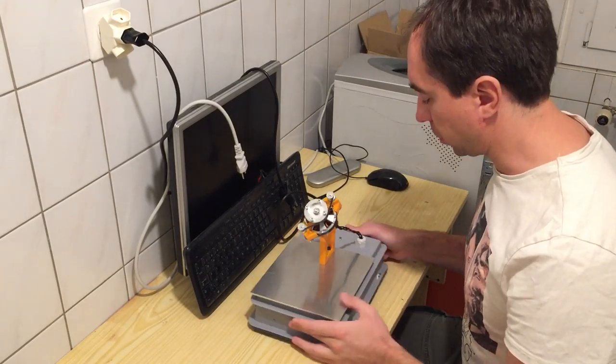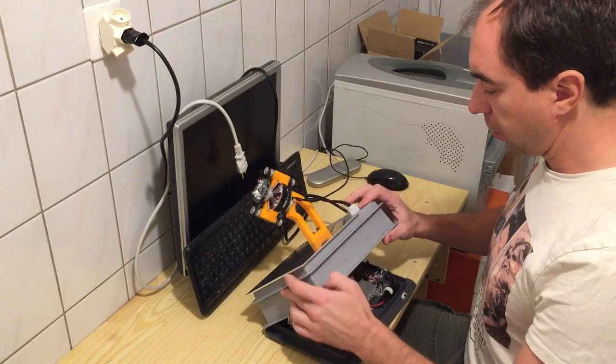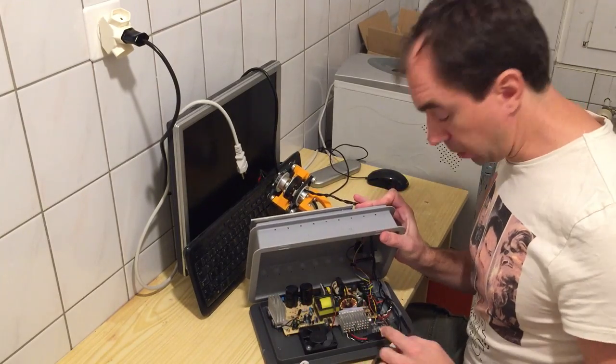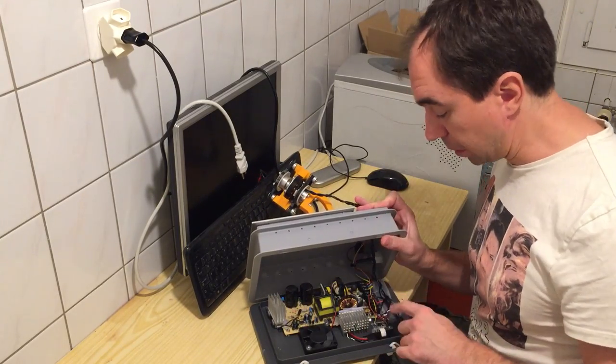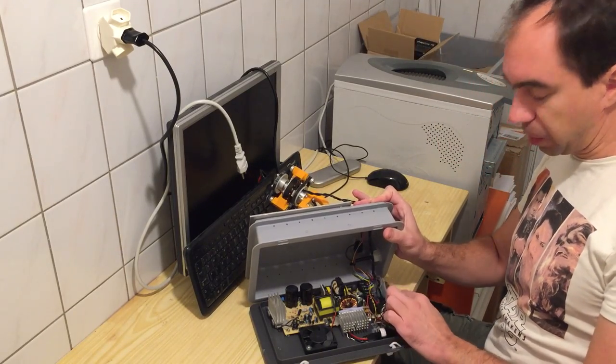So, this is the box. Let's see what we have here. This is my reducer. Inside the box there is a power supply, there is a controller to control the motor, there is Arduino to control the controller, and I have also some speckles.